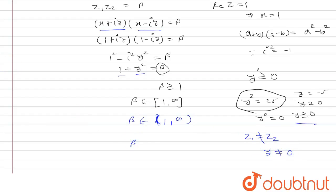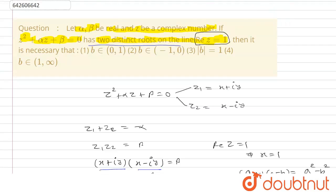So that means beta belongs to 1 to infinity is our answer. Now, let's take the option. As we can see here, option 4, beta belongs to 1 to infinity is the right answer. Thank you.